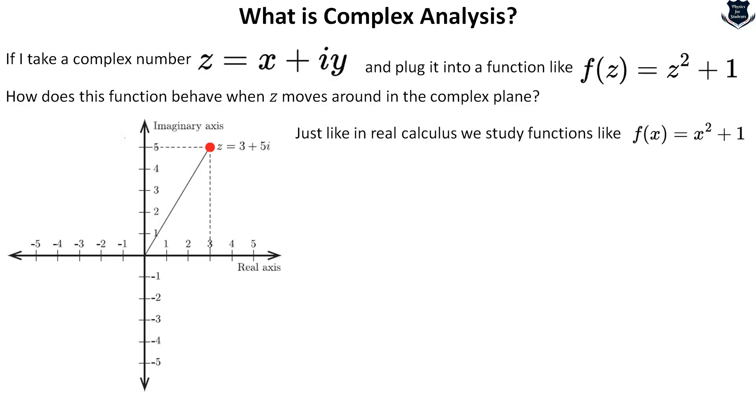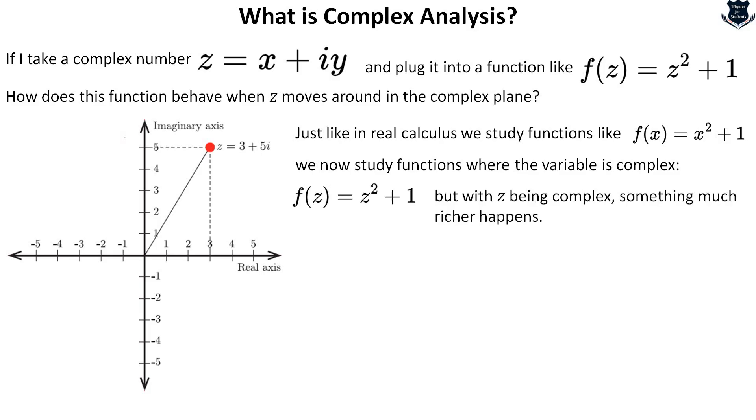In contrast with the real calculus that we do, for example f of x equals x squared plus 1, now we study variables in a complex number. So this is a complex number with z being complex. Something more richer happens. What things happen, we will take care in the next part.